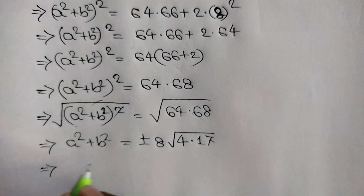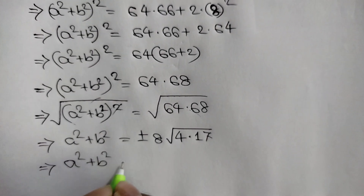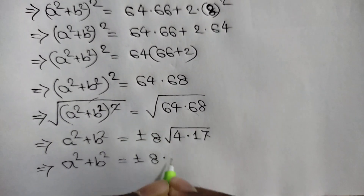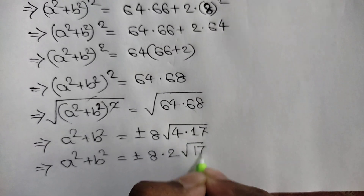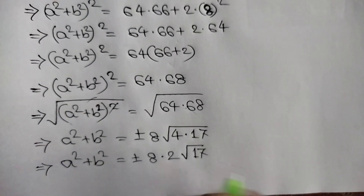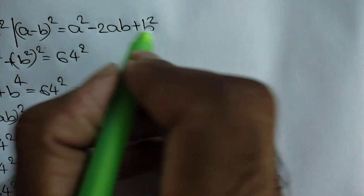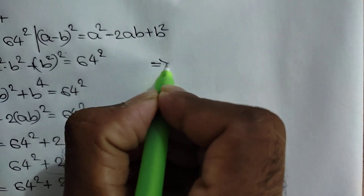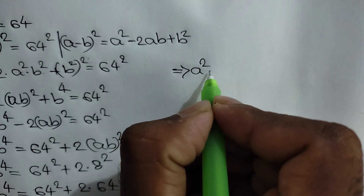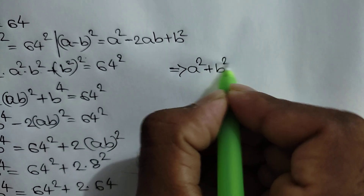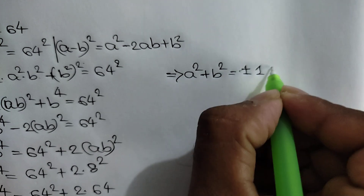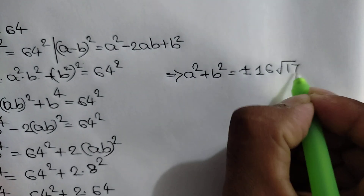So a squared plus b squared is equal to plus or minus 8 times the square root of 4, that means 2, times the square root of 17. Therefore a squared plus b squared is equal to plus or minus 8 times 2 times square root of 17, which gives plus or minus 16 square root of 17.